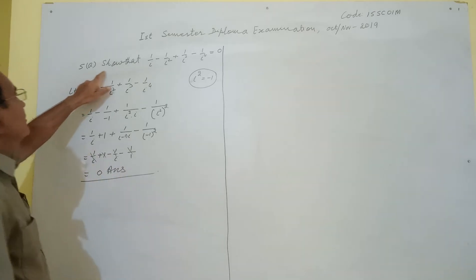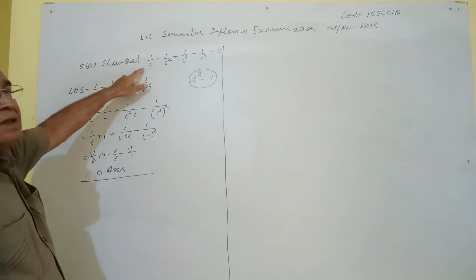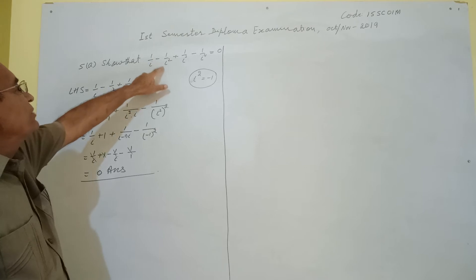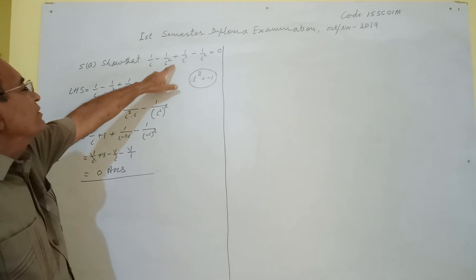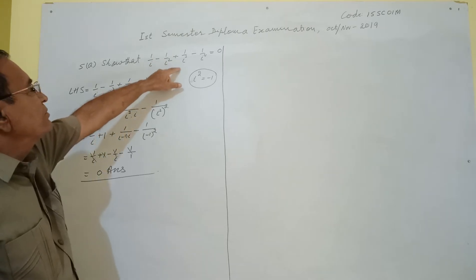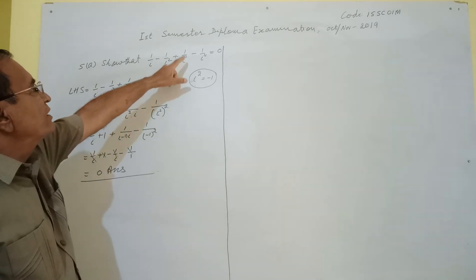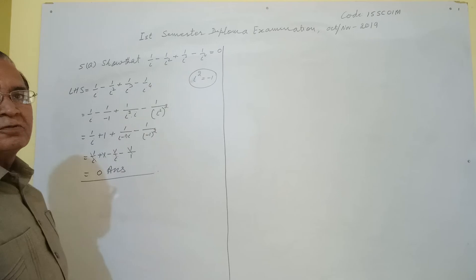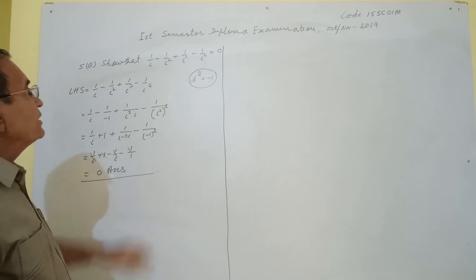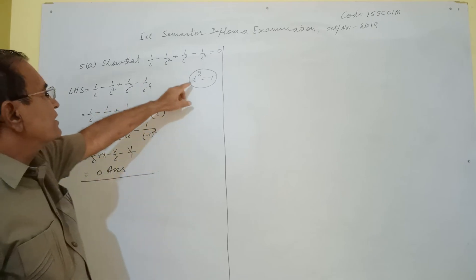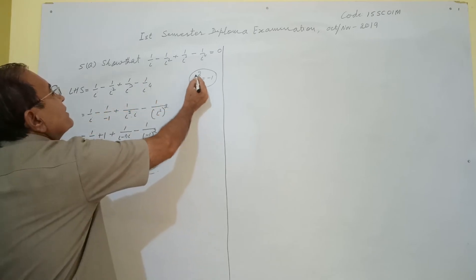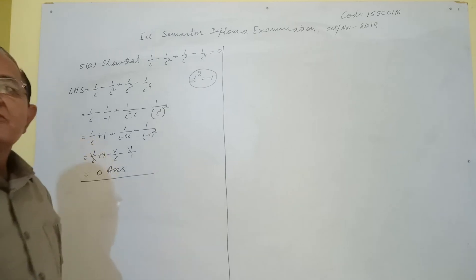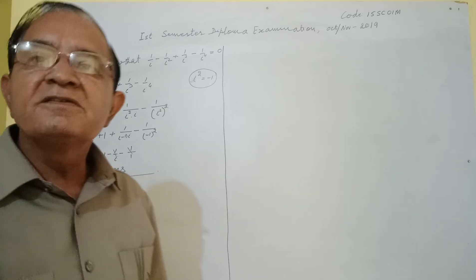5th day part: show that 1/iota - 1/iota² + 1/iota³ - 1/iota⁴ = 0. Here we will use the concept that iota² = -1.